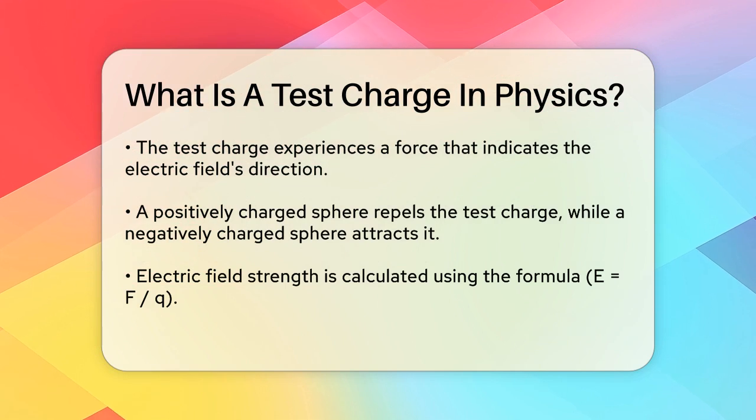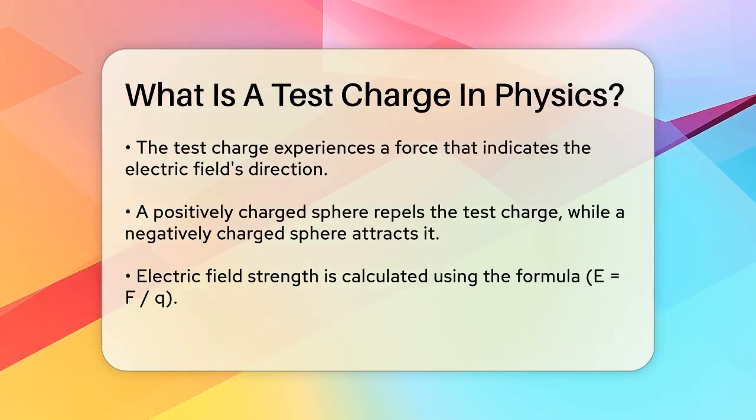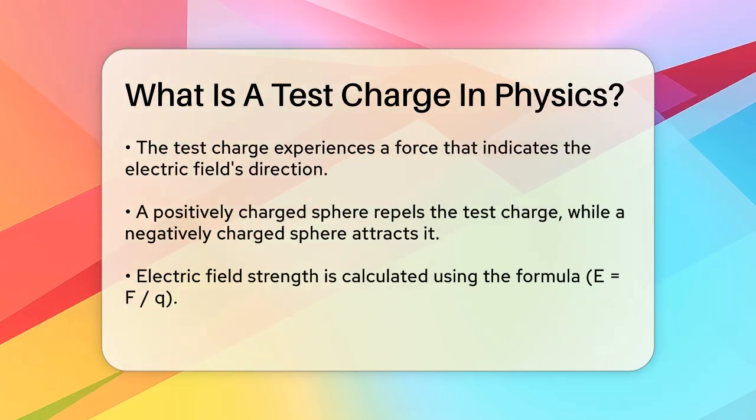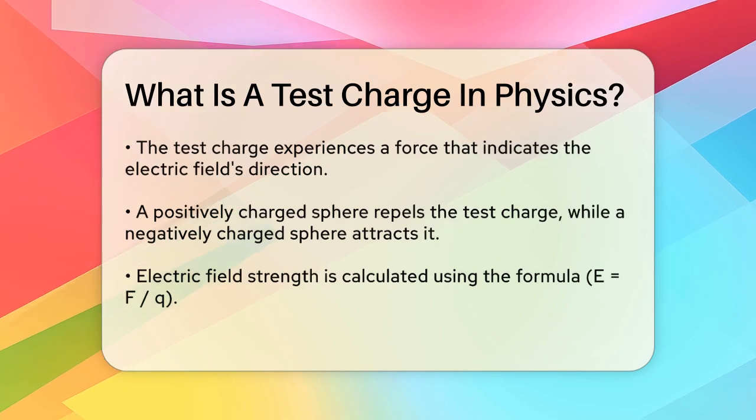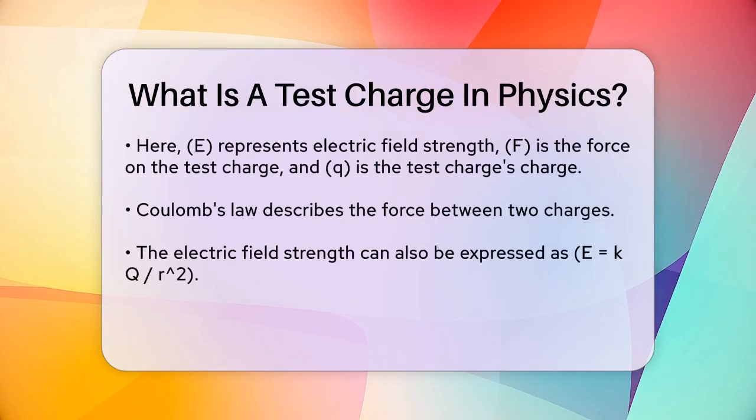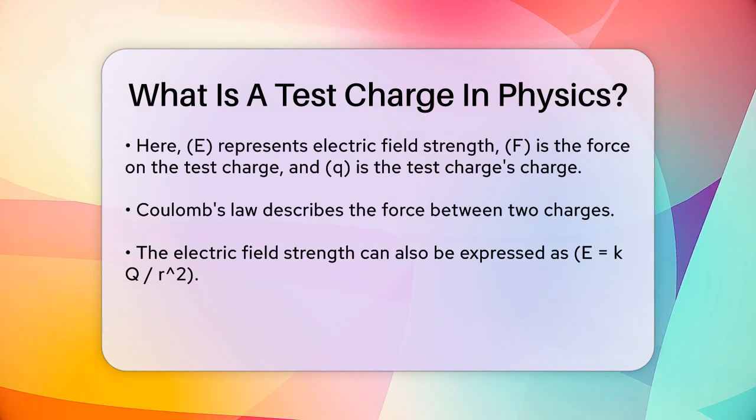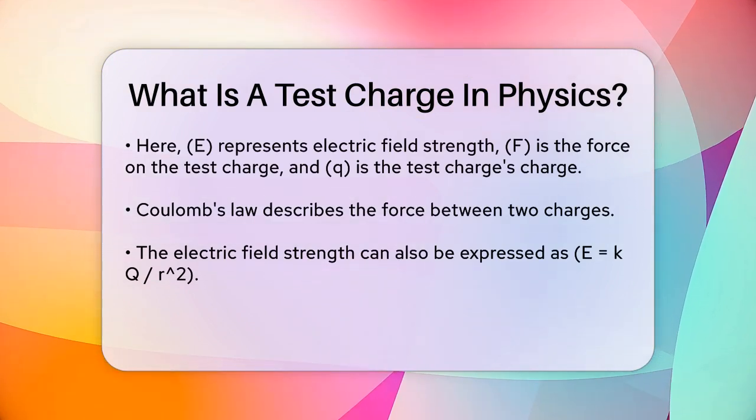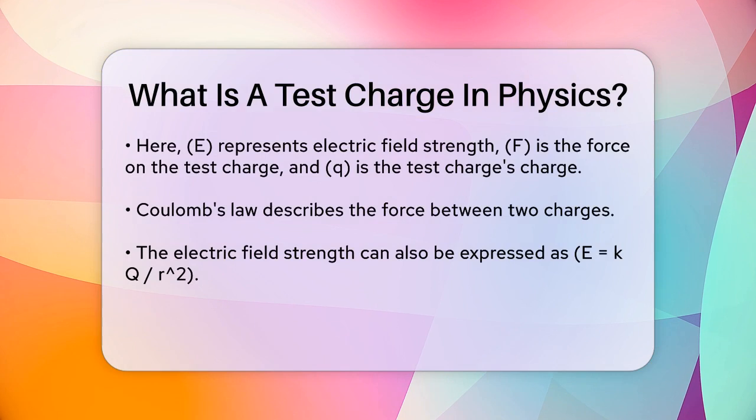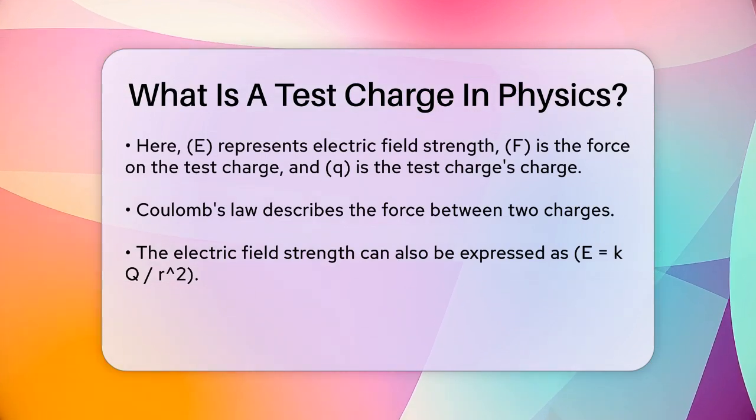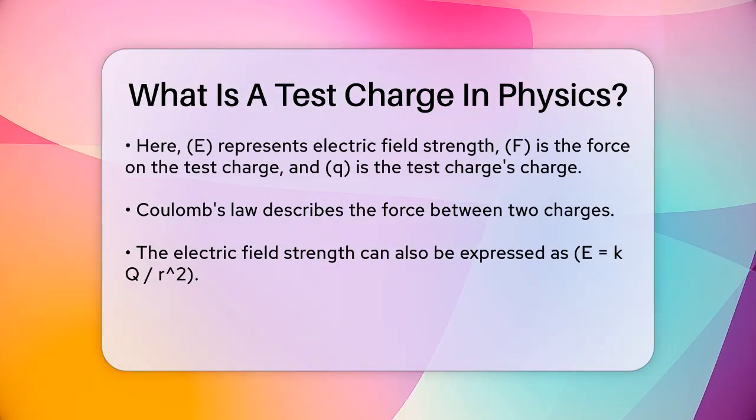The strength of the electric field is calculated by measuring the force exerted on the test charge and then dividing that force by the charge of the test particle. This is expressed as E = F/Q, where E is the electric field strength, F is the force on the test charge, and Q is the charge of the test particle.